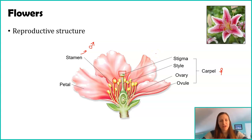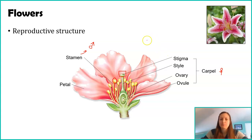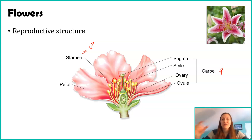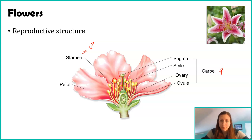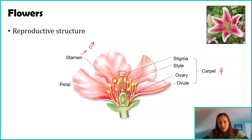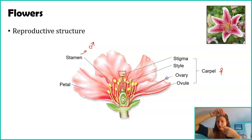We'll mention the stigma again in the life cycle, so if you're not following yet, that's okay. When the male reproductive material lands on the stigma, sperm is going to travel through the style. The style is just the longer part of the carpal, but the sperm is going to travel through it. Then the sperm is going to travel through the ovary — the ovary is this larger bulb. So you've got the stigma, the sticky part on top; the style is the tunnel leading to the ovary.